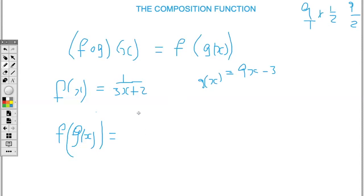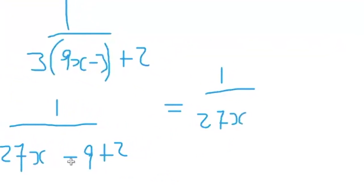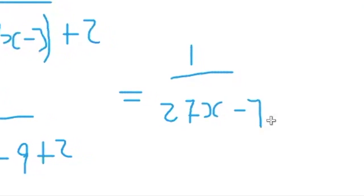Now substitute g into f: replace x with 9x minus 3. So I'll have 1 over 3 times (9x take away 3) plus 2. Clearing the bracket: 3 times 9 is 27, so that will be 27x; 3 times negative 3 is negative 9, plus 2. So the answer is 1 over 27x minus 9 plus 2, giving us 1 over 27x minus 7.